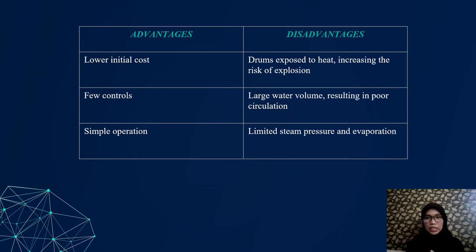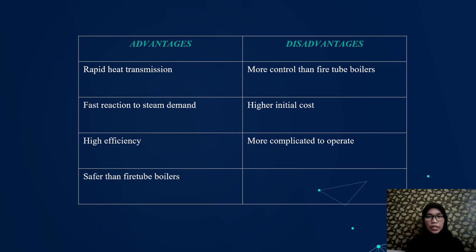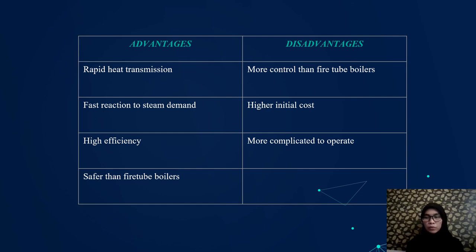For a water tube boiler, water flows through the tubes and is surrounded by hot combustion gas in the shell. Water tube boilers typically range in size from 500,000 to more than 20 million BTU input. Here is the water tube boiler diagram. The advantage of water tube boilers is high efficiency and fast reaction to steam demands. The disadvantage is that they are more complicated to operate and require more control than fire tube boilers.